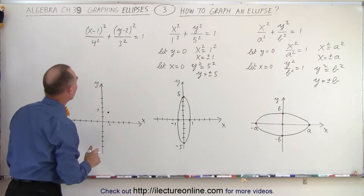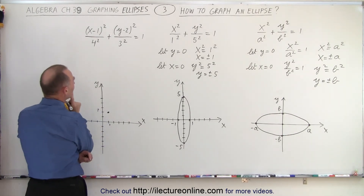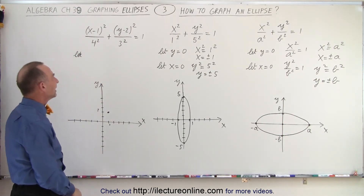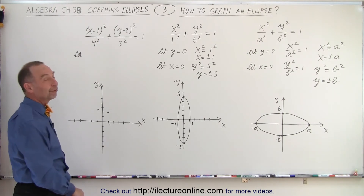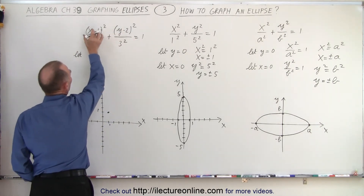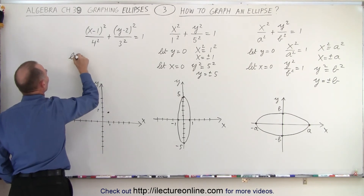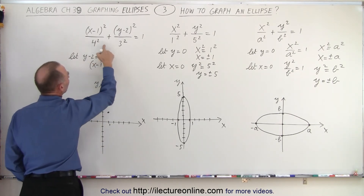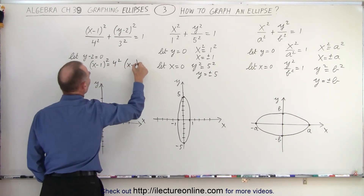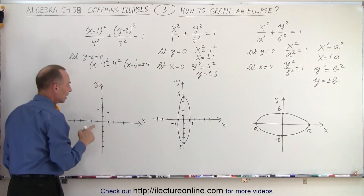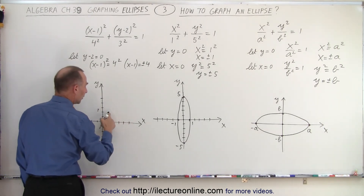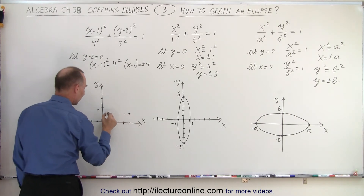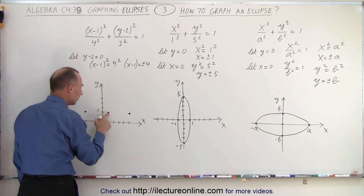Everything is going to be relative to that offset location. Let y − 2 = 0. When we do that, we get (x − 1)² = 4², so (x − 1) = ±4. Meaning from the offset point, we move 4 units in the positive x-direction and 4 units in the negative x-direction. So we count 4 to the right from the center and draw a dot, then 4 to the left and draw a dot — both relative to the offset point.